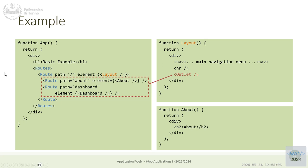So we have a constant part of the page — always the same — which is everything that matches slash (always rendered via Layout), and we have a variable part that depends on the rest of the URL matching.